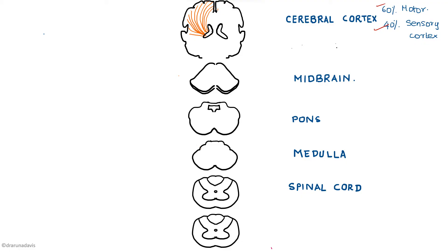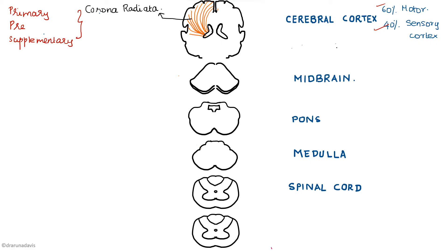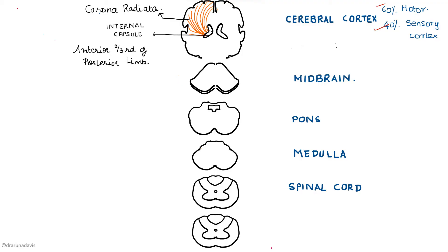From all parts of the motor cortex, fibers arise in the corticospinal tract and they form what is known as the corona radiata. These fibers then move through a small area called the internal capsule, where all the fibers are densely packed together. That is why a lesion in the internal capsule produces hemiplegia, whereas a lesion just in the cerebral cortex would produce only monoplegia. The fibers pass through the anterior two-thirds of the posterior limb of the internal capsule — this is very important.